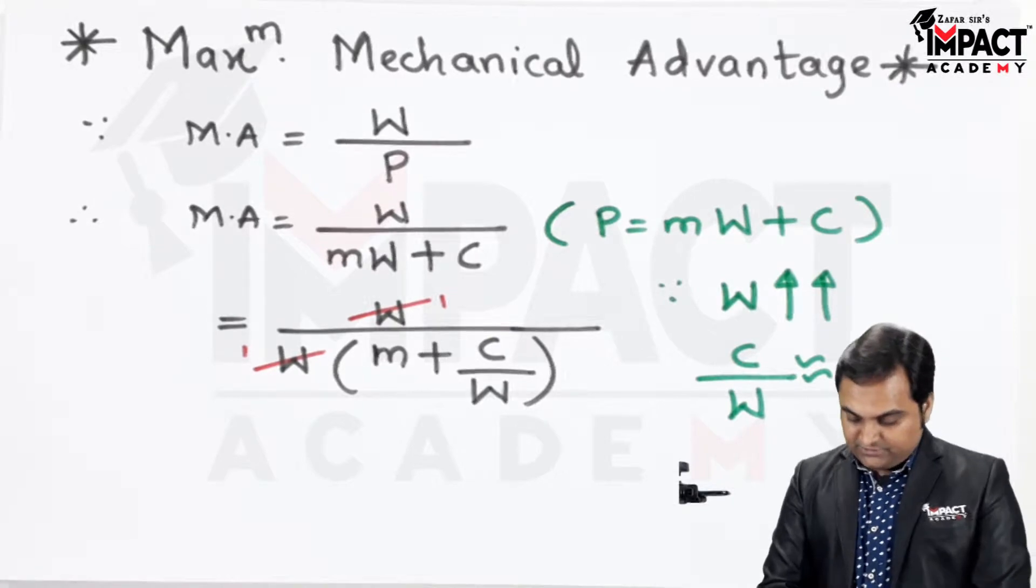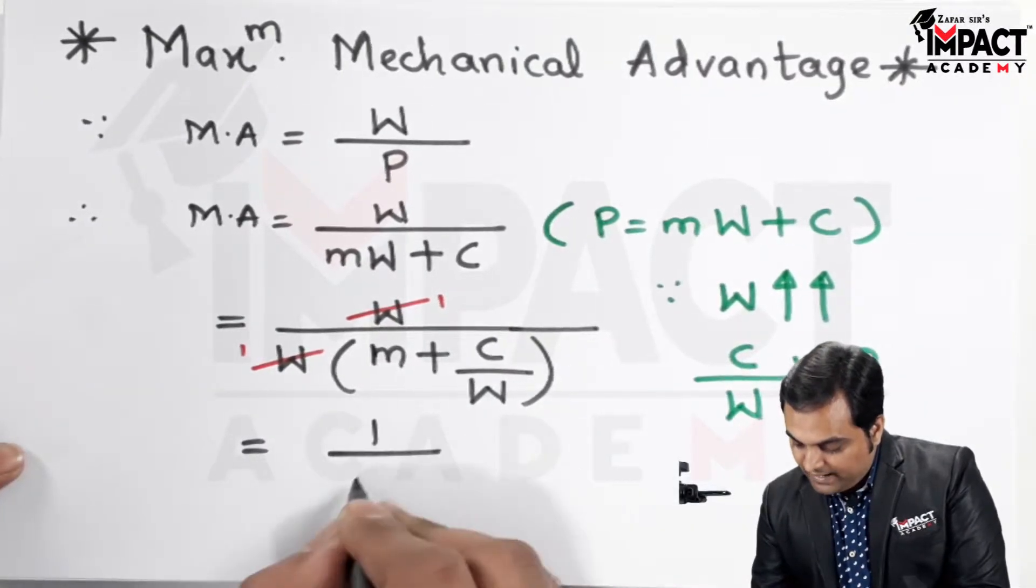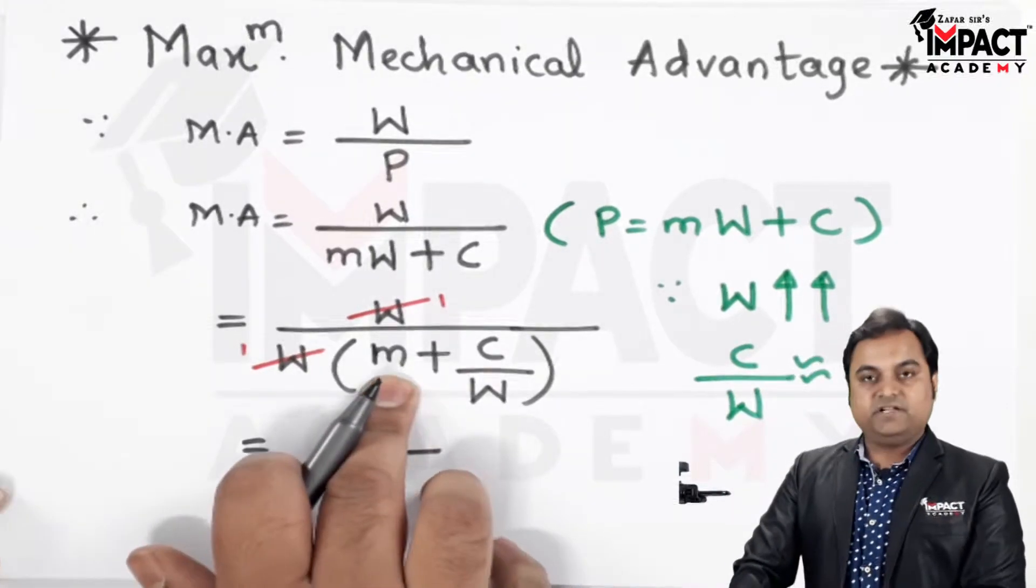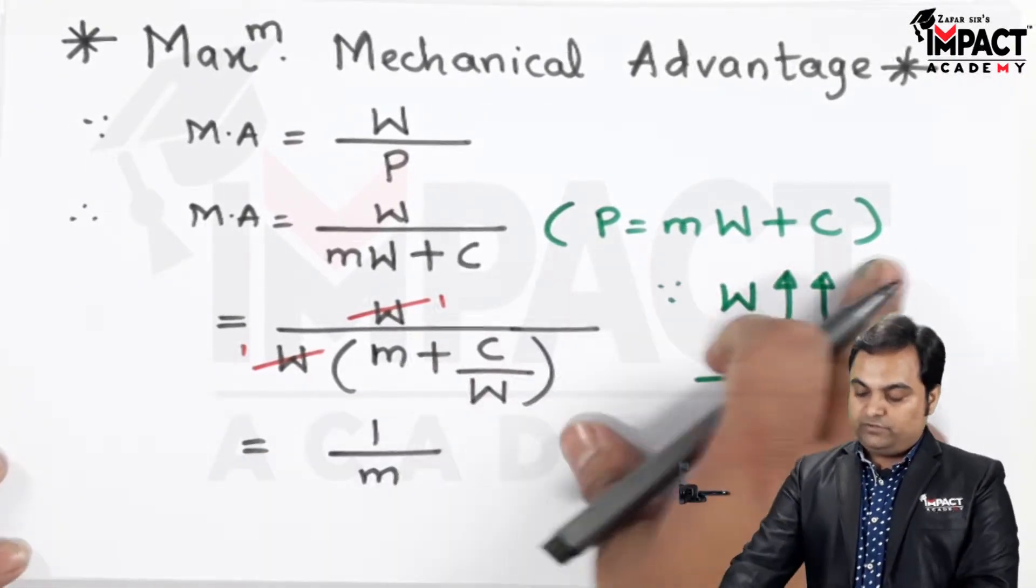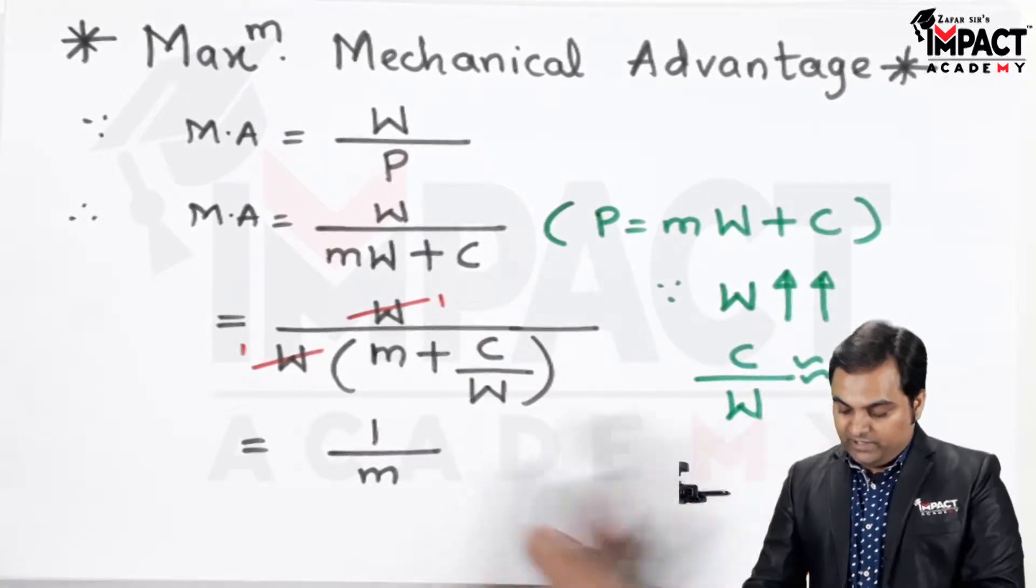So finally, what remains here is that we have 1 upon M. This M is nothing but the slope of the line which we get in terms of the law of machine.